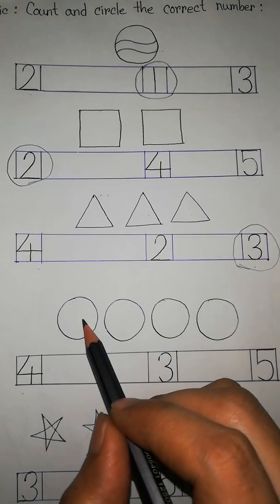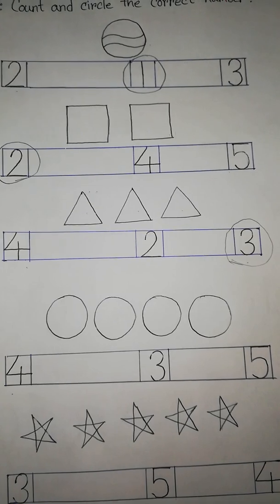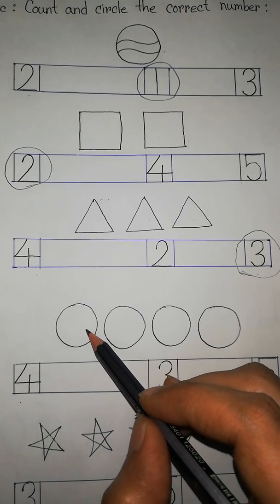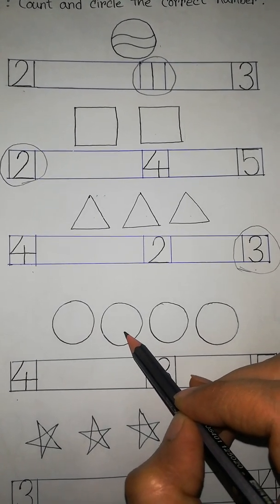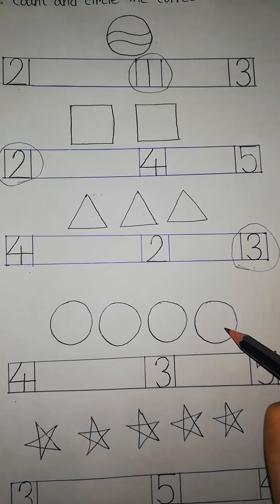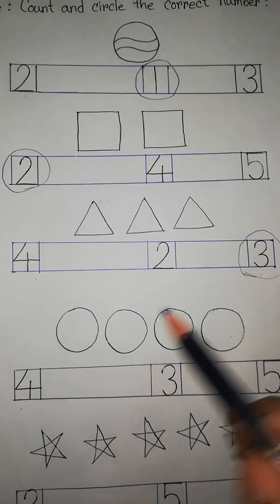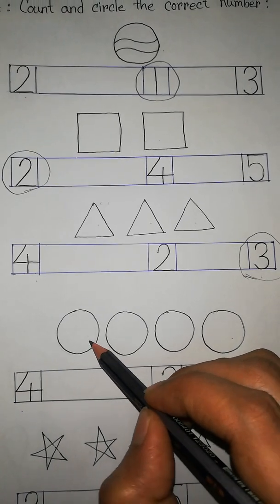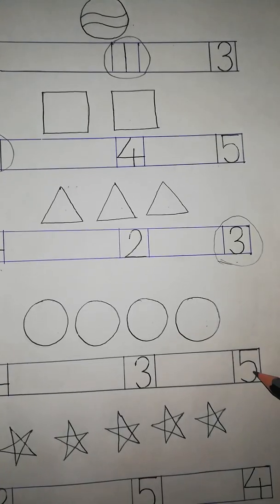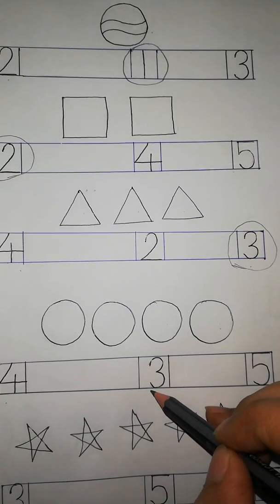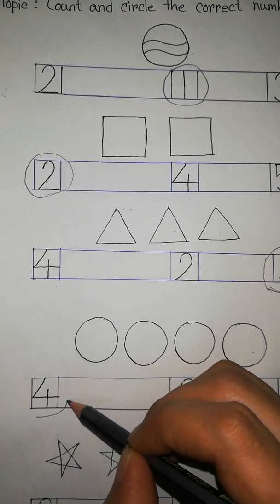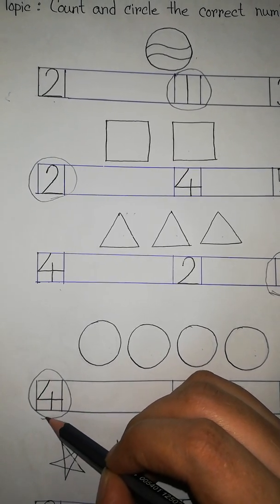There is a circle shape. Now we count the circles: 1, 2, 3, 4. How many circles are there? 4 circles. Let's count with me: 1, 2, 3, 4. Is it 4? No. Is it 4? No. Is it 4? Yes. So we circle the number 4.